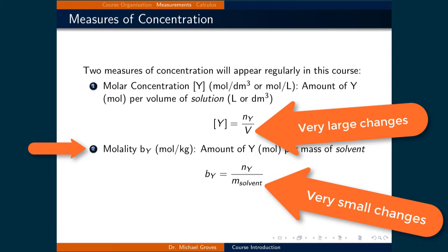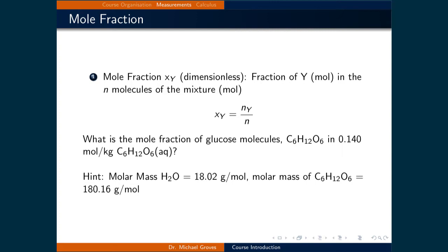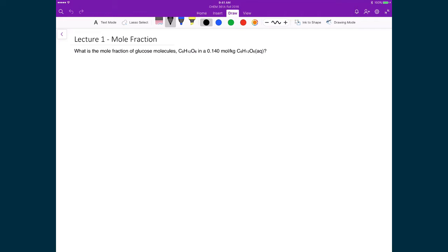Another way to quantify the amount of a substance is to express it using its mole fraction. This is the fraction of the moles of a given substance relative to the total number of moles in the mixture. So here's a quick example which includes molality and mole fraction.